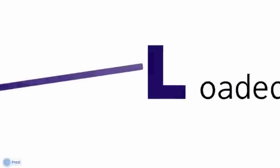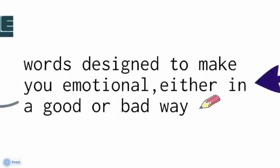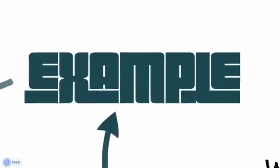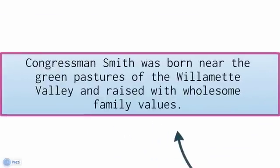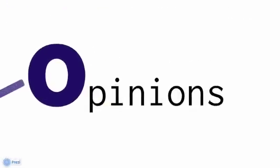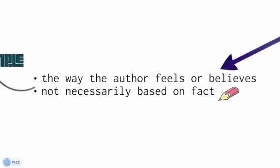Another clue is loaded words, where the author uses words designed to make you emotional, either in a good or bad way. For example: 'Congressman Smith was born near the green pastures of the Willamette Valley and raised with wholesome valley family values.' Words like 'green pastures,' 'raised with,' and 'wholesome' are loaded words. Then there are opinions, where the author gives you specifically the way they feel, not necessarily based on fact.